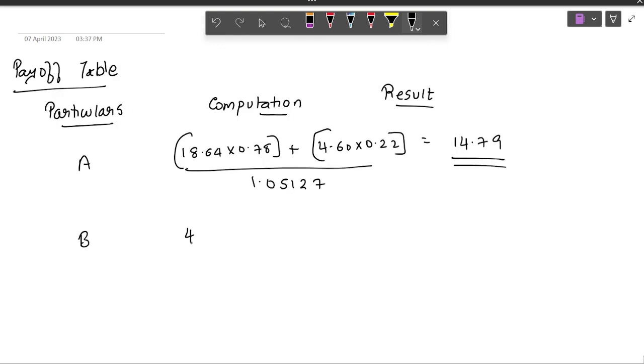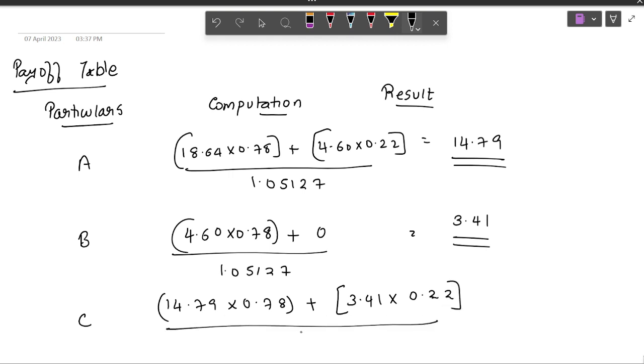Second at B, what will it be? 4.6 into 0.78, CU into IDUD, plus CD into UIUD, whole divided by I. So when you do this, you will get the answer as 3.41. Am I right? At C, at C, the formula would be 14.75 into 0.78, plus 3.41 into 0.22, whole divided by 1.05127. You will get the answer as 11.69.